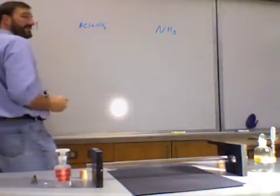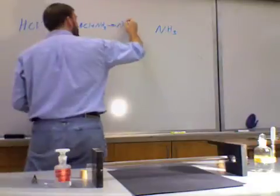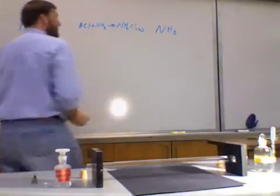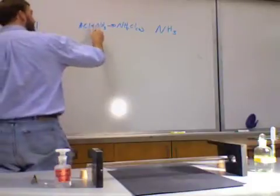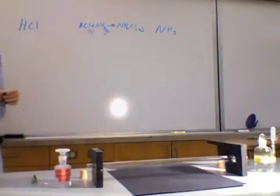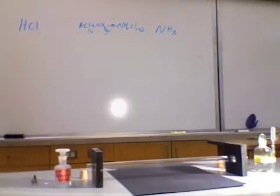will react together to produce ammonium chloride, which is a solid. So we're going to start with two gases. They're going to meet together and produce a solid. That solid happens to be a white. So we're going to look for that formation taking place. And that's kind of why we have the bright light here. Try to make it a little easier for you to see.